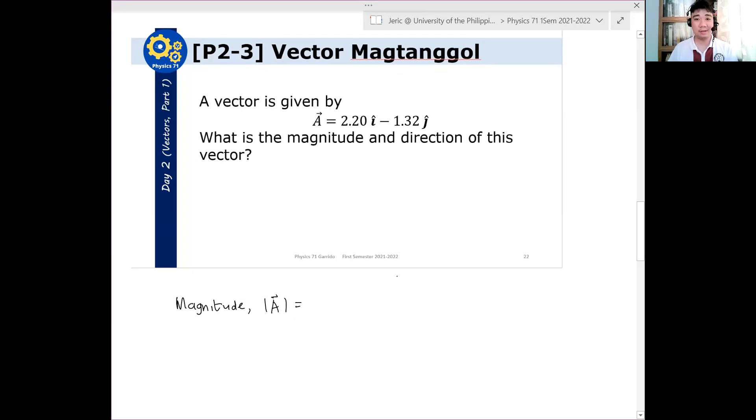Ano lang gagawin? You just use your Pythagorean theorem. So Ax is just 2.20, and then Ay is just minus 1.32. So when you do that, you get square root of 2.20 quantity squared plus minus 1.32 quantity squared. And when you do that, please check your calculator. A should be about 2.57. Tama? Tama ba?